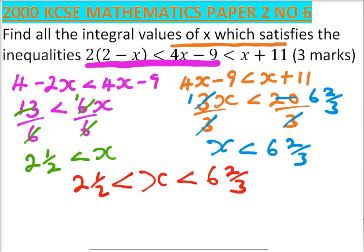Now we can write the integral values. Since x is greater than 2 and a half, 2 is not included, so we start with 3, then 4, 5, and 6.